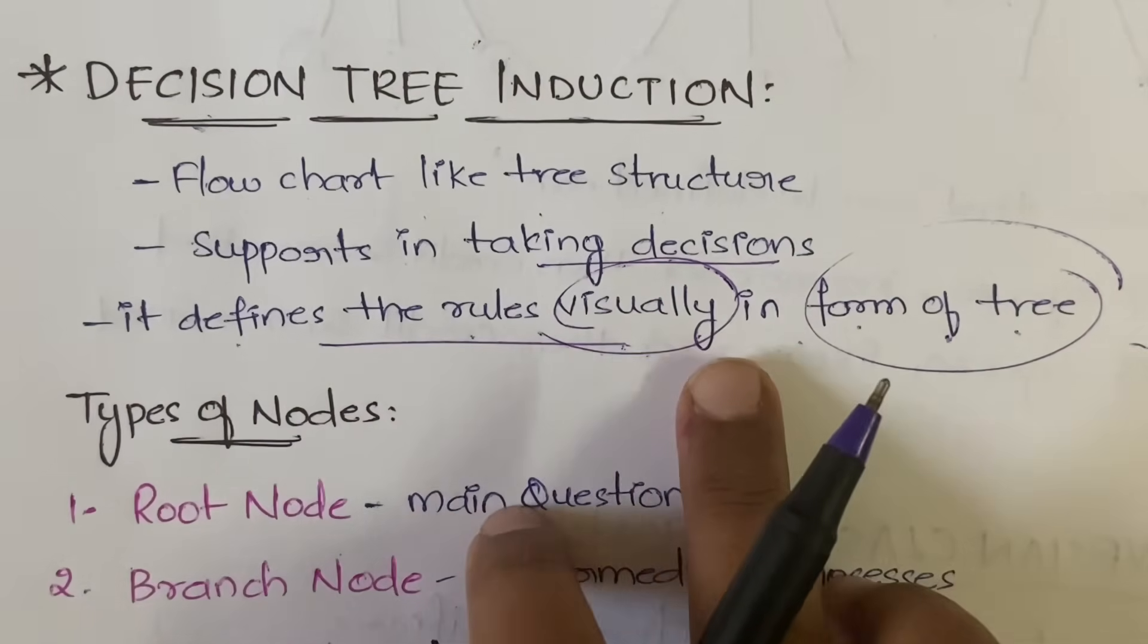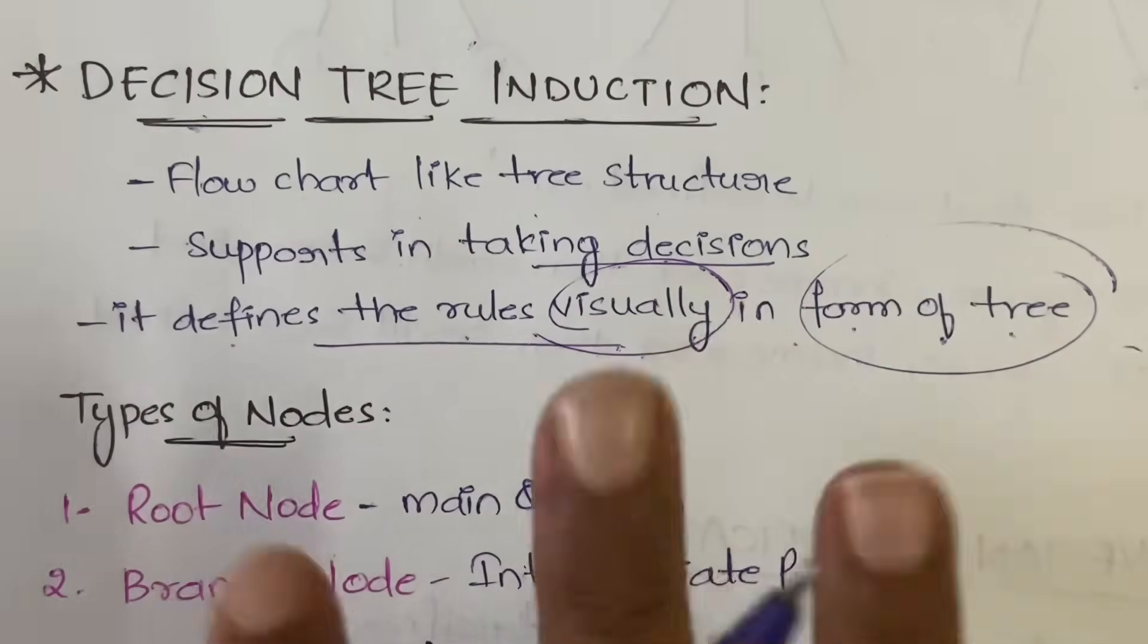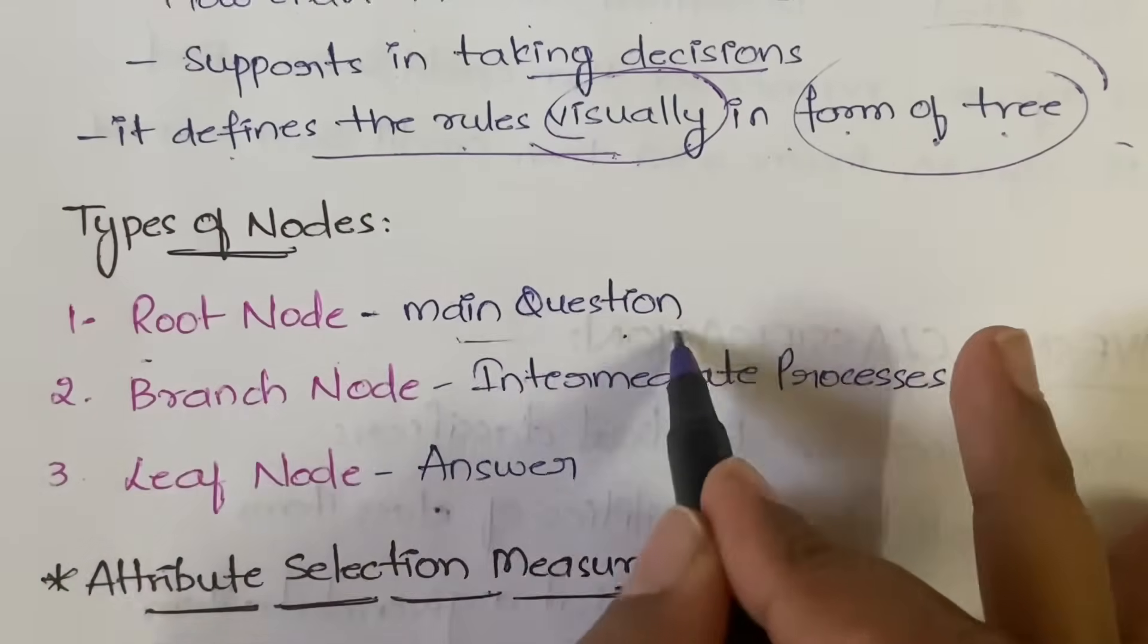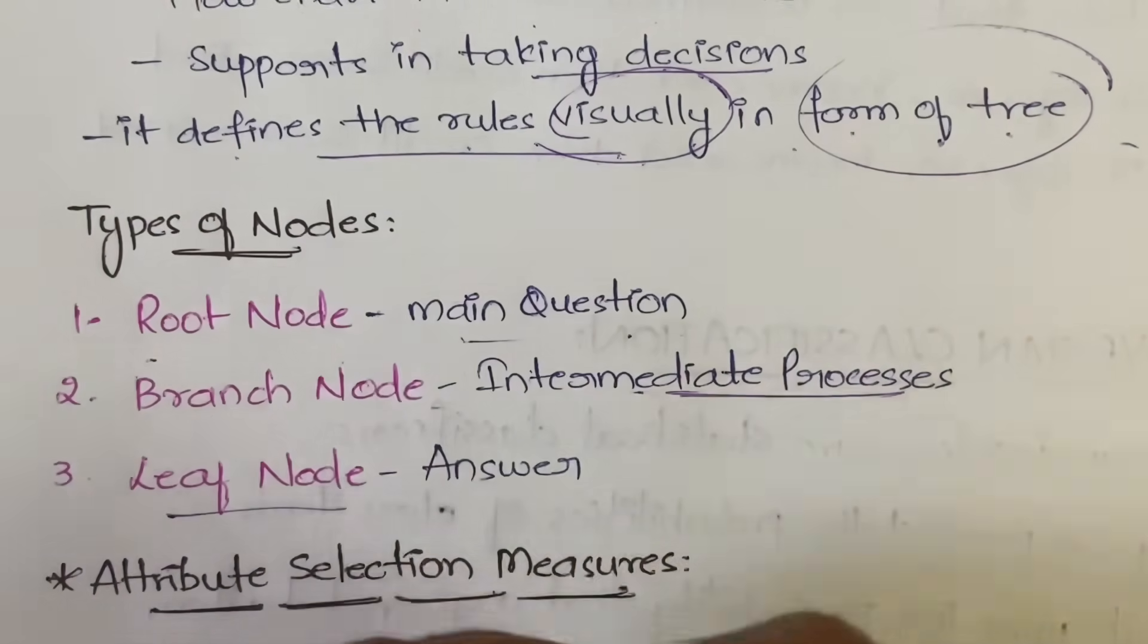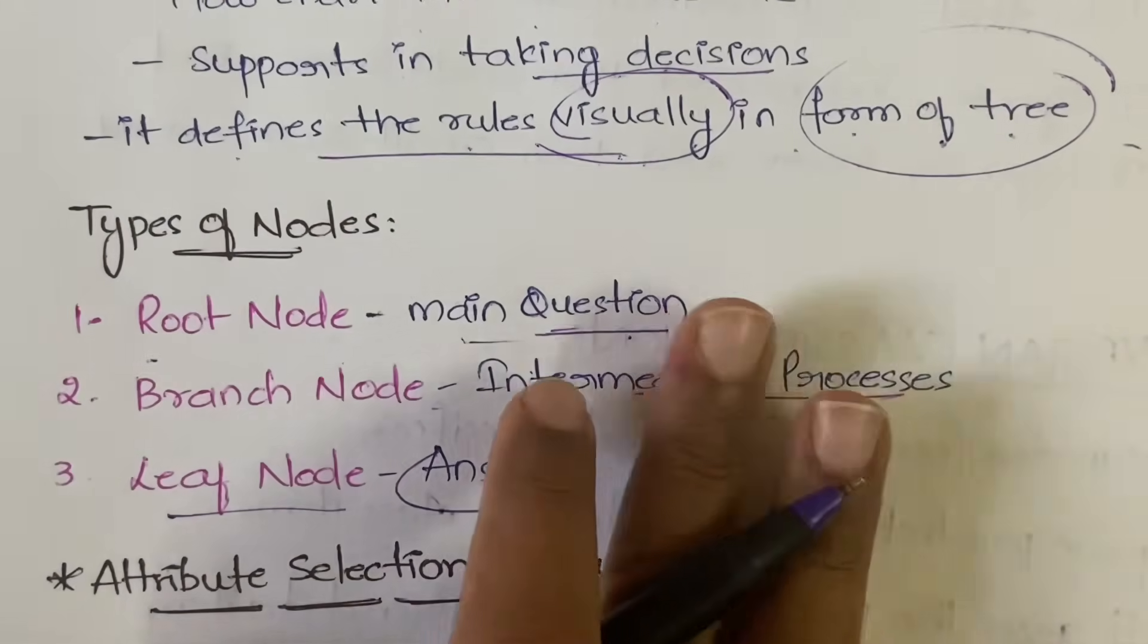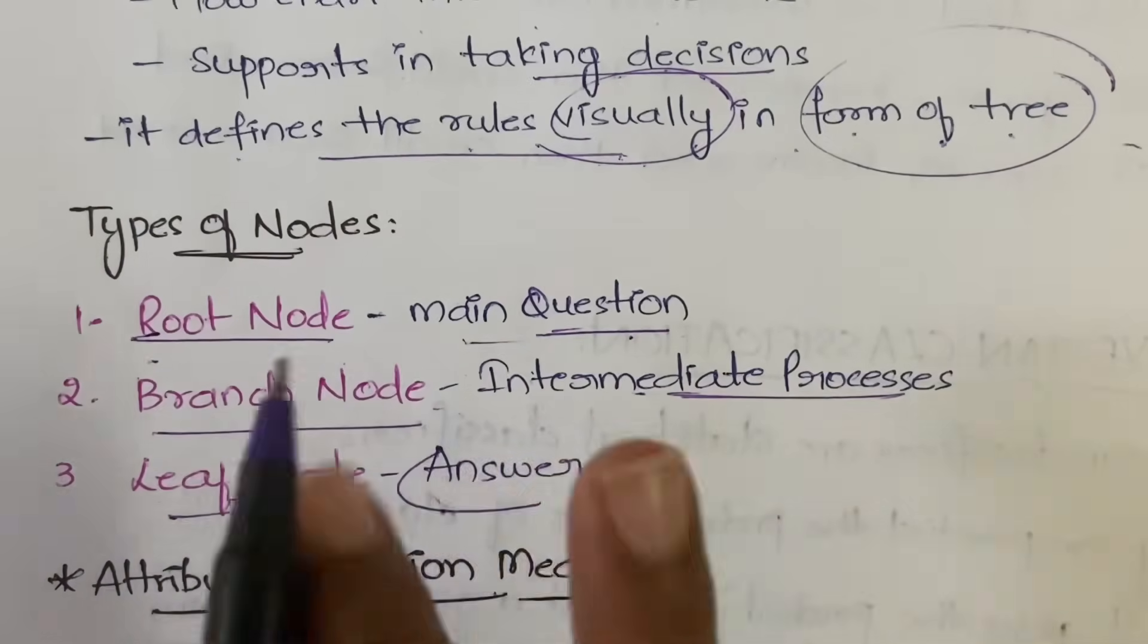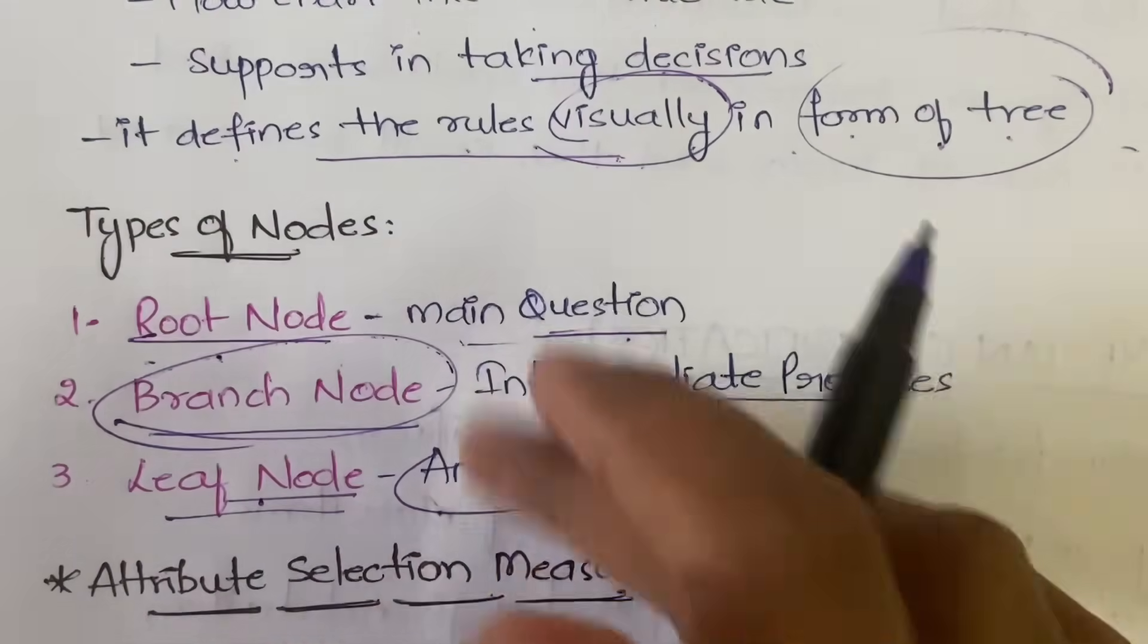We have three types of nodes. First is root node, that is the main question. Branch node is the intermediate processing nodes. And the leaf node is the last one which is nothing but the answer to the question. Root node is the question, leaf node is the answer, and branch nodes are intermediate processing in order to get this answer.